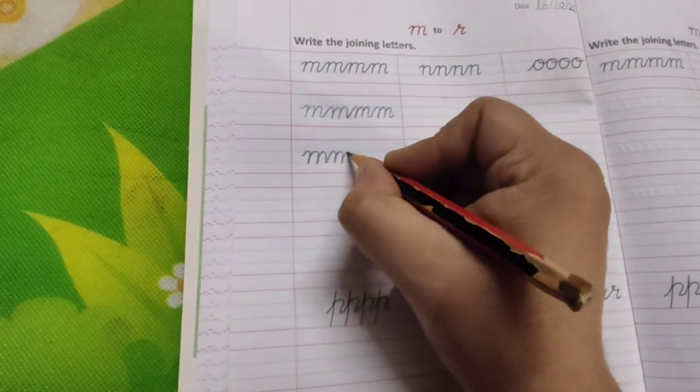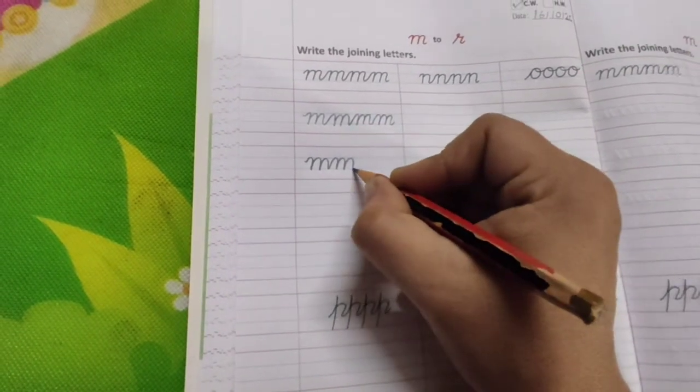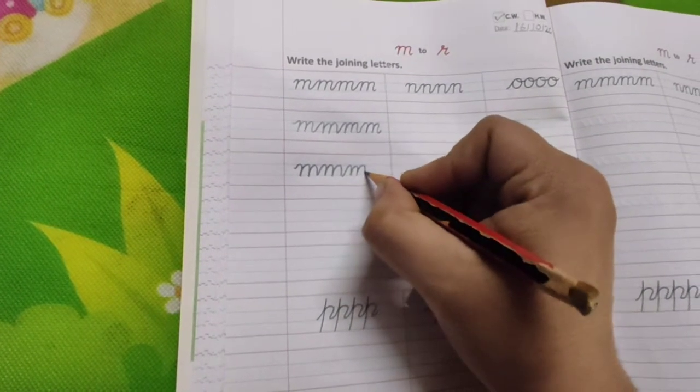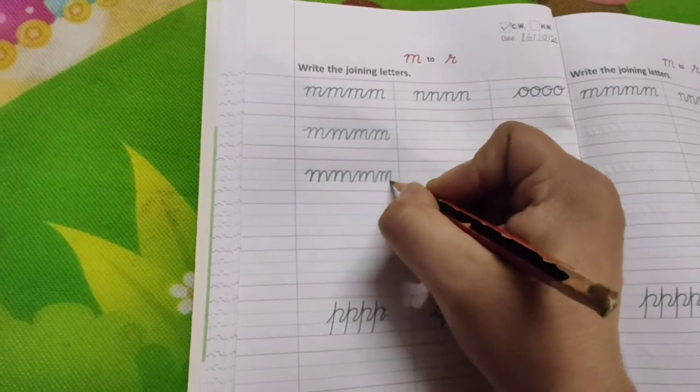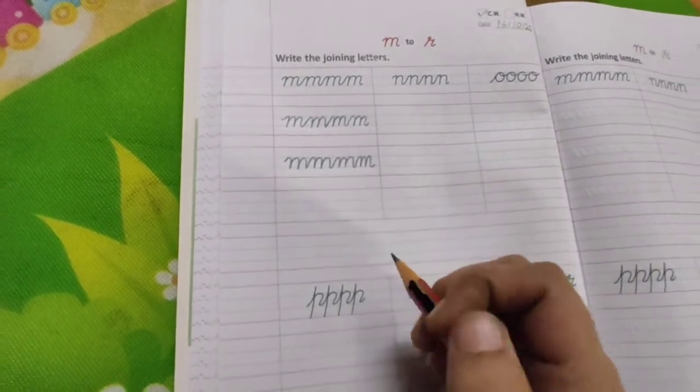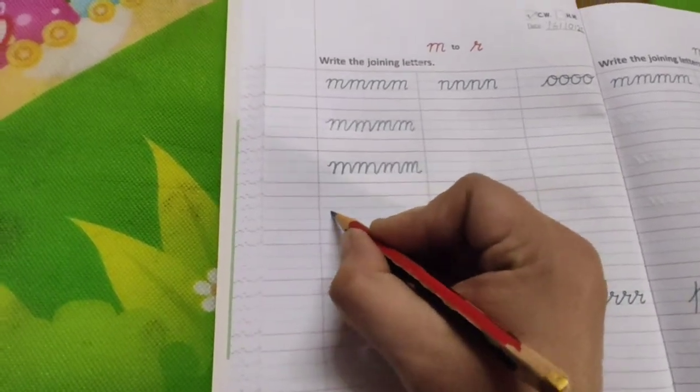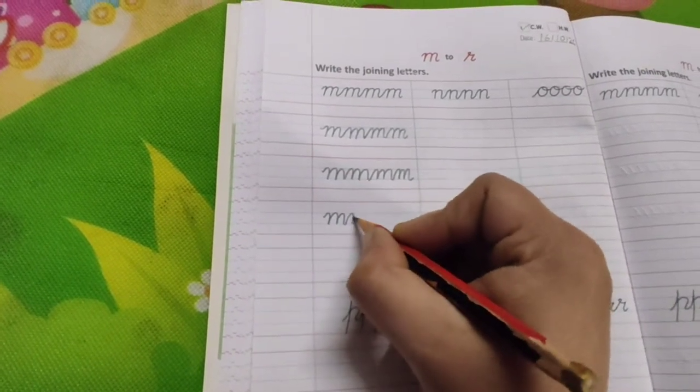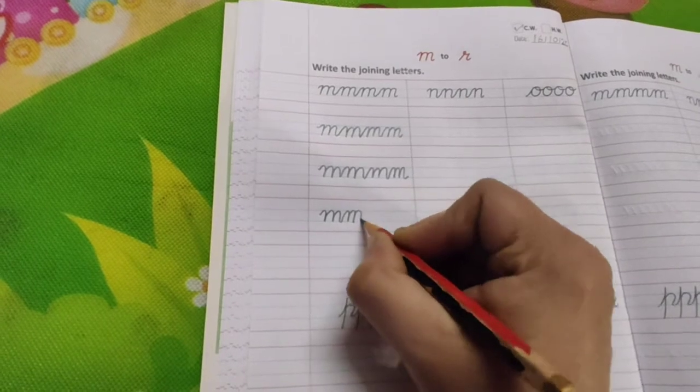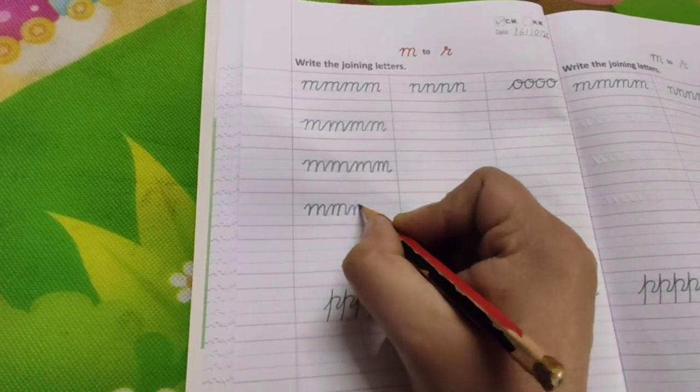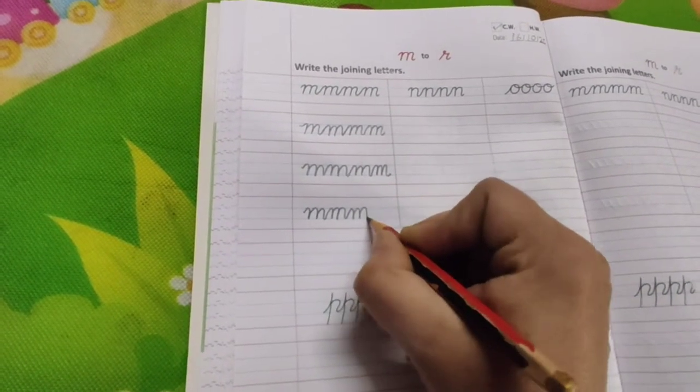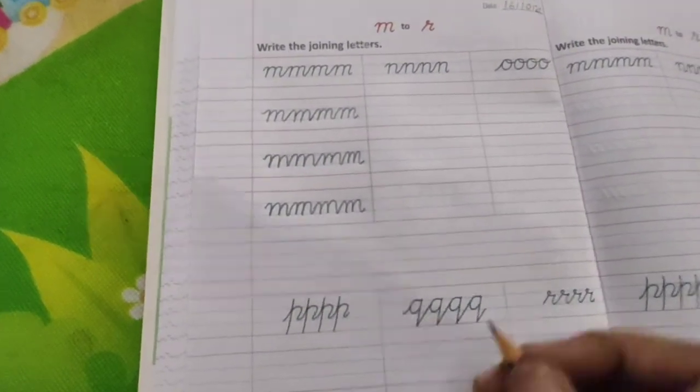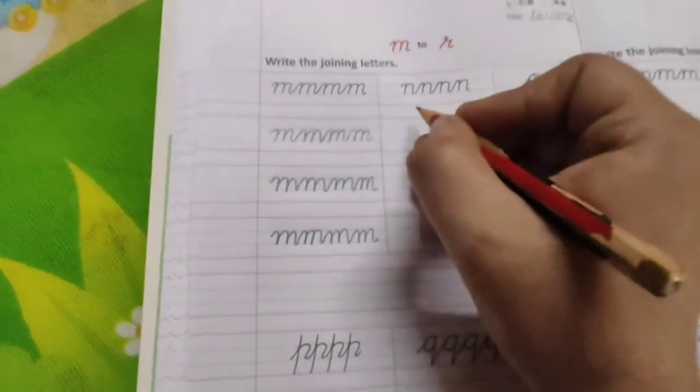Make sure when you will write children, don't lift your pencil again and again. Okay, so write it down in one single flow. Then it will look very nice. Now write it again here. See, I am not lifting my pencil again and again. I am writing in one single flow. And it is looking very nice. Okay, now this is M. Come here.